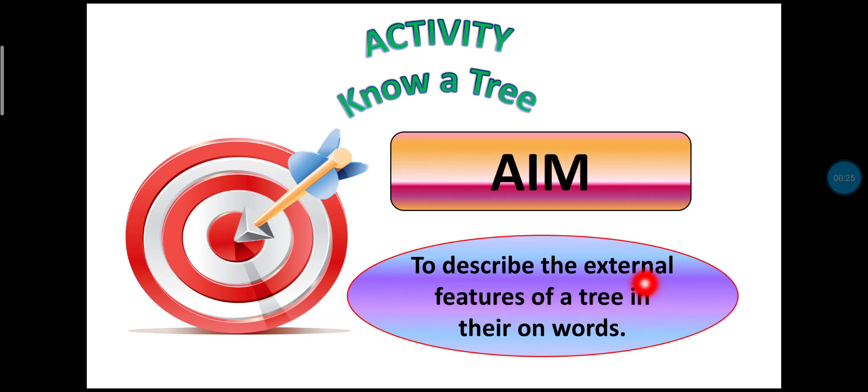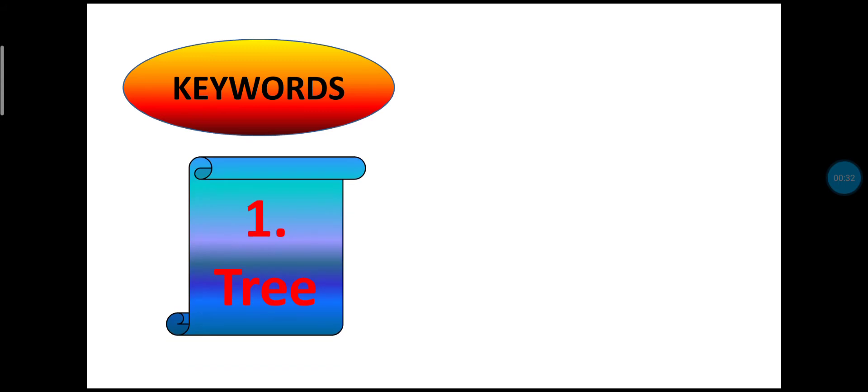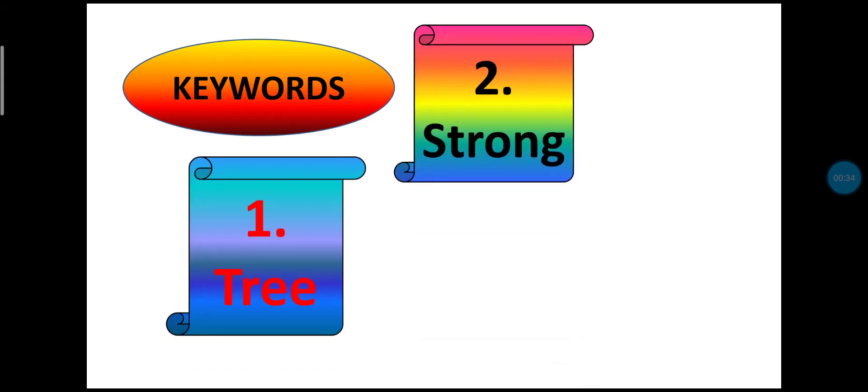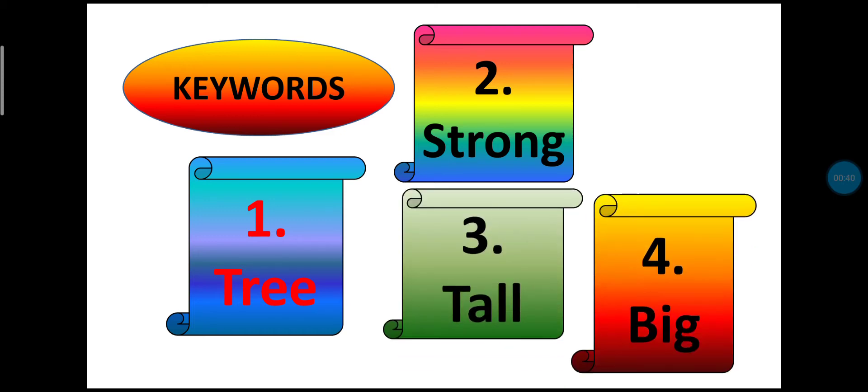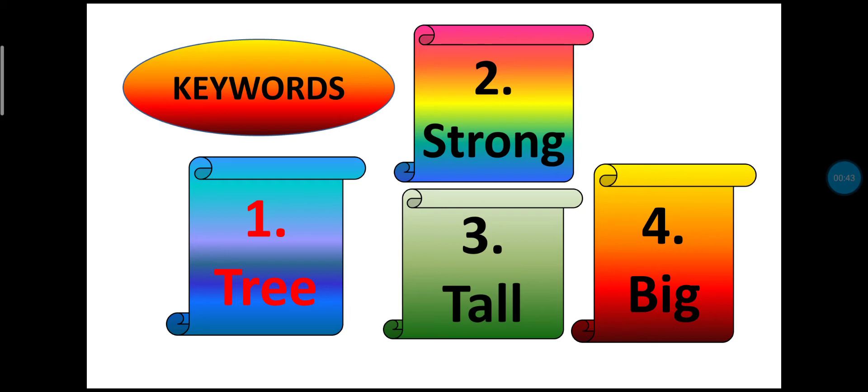Aaj ham class mein tree ke features ko janenge. In today's class our keywords are Tree, Strong, Tall, Big. These are keywords for today.